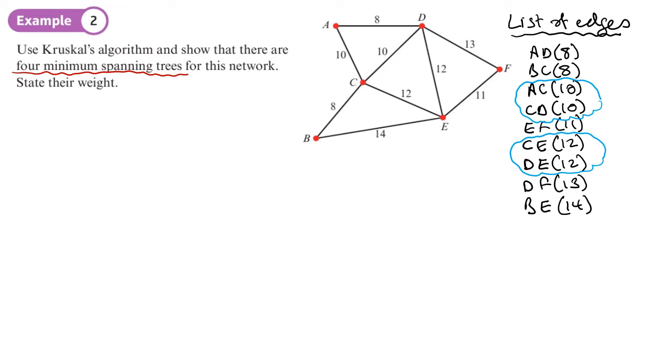I'm going to start with AD. It doesn't matter if I start with AD or with BC. They're going to be my first two, so let's just highlight those two edges, BC, AD. Now, we've got two choices for the next edge that we pick, either AC or CD.